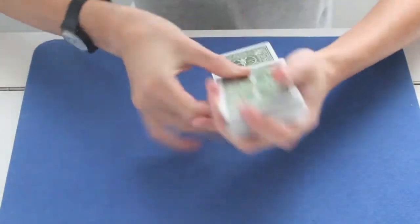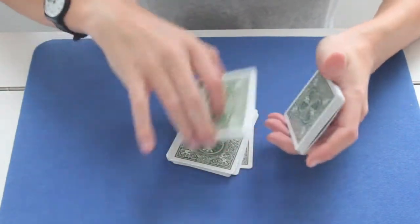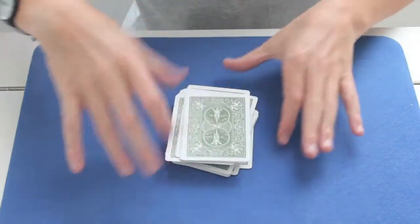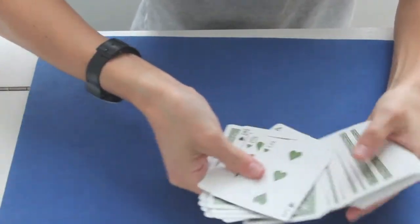I'm going to do a few cuts, so it's lost. Now I'm going to perform the Slug Shuffle, which is basically putting cards upside down in the deck so that it's a complete mess.